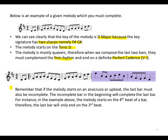We can see the highlighted bars that were added at the end. Remember that if the melody starts on an anacrusis or upbeat — as we spoke about in harmonic analysis — the last bar must also be incomplete. The incomplete bar at the beginning will complete the last bar. In the example above, the melody starts on the fourth beat of the bar; therefore, the last bar will only end on the third beat.